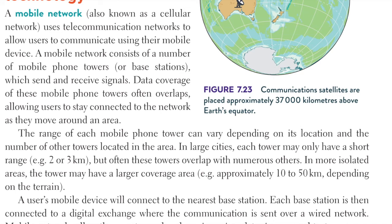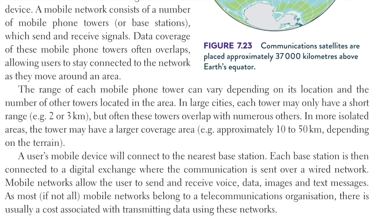In large cities, each tower may only have a short range of 2 or 3 kilometres, but these towers often overlap with numerous others. In more isolated areas, the tower may have a larger coverage area of approximately 10 to 50 kilometres, depending on the terrain. Users of mobile devices will connect to the nearest base station, which is then connected to a digital exchange where the communication is sent over a wired network — so your mobile phone actually uses wired technology. Mobile networks allow the user to send and receive voice data, images, and text messages. As most mobile networks belong to a telecommunications organisation, there is usually a cost associated with transmitting data using these networks.